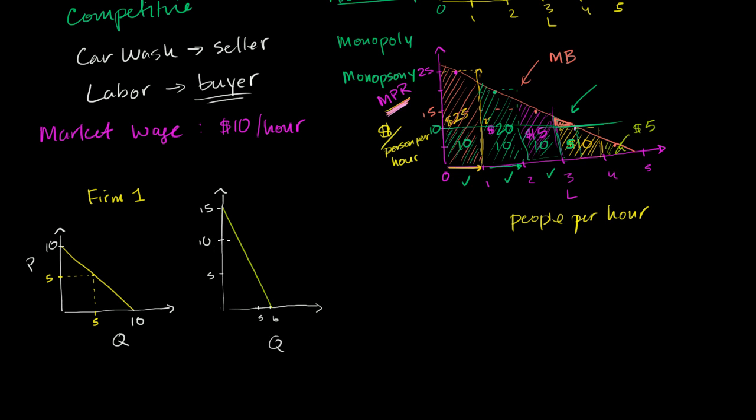And I could put some extra points here. At a price of 10, this firm will demand two units. If we're thinking labor, $10 per hour, they'll get two people per hour. At a price of five, they will demand four units. So these are all, we've looked at a couple of points on this demand curve.